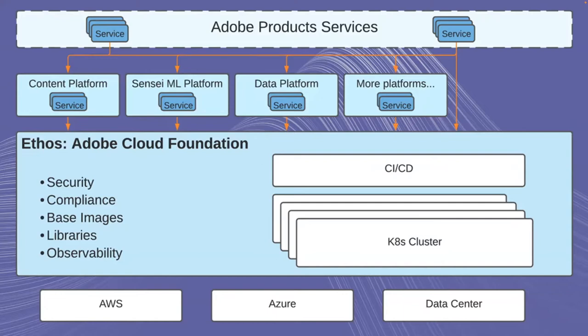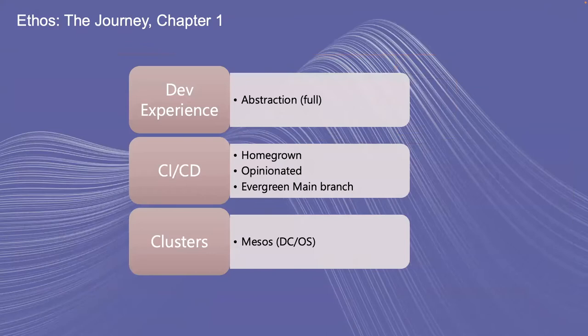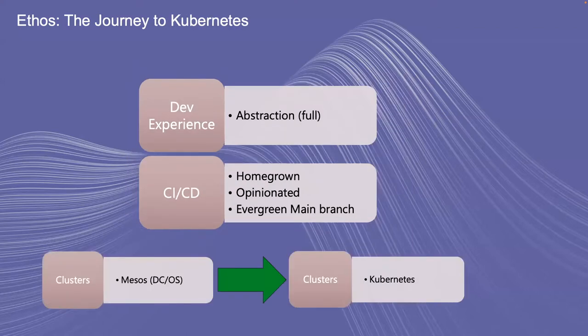Now let's talk at a very high level about the journey that Ethos has had. Ethos started around 2015. Our clusters were running on Mesos DCOS with homegrown tools that we had written from scratch. We provided abstraction to developers to deploy their services using configuration in a cloud and technology agnostic way. In 2020, we migrated our clusters to Kubernetes with minimum impact on the services. With this move, we can now use community-driven tools and frameworks rather than our homegrown tools, which only we were maintaining.